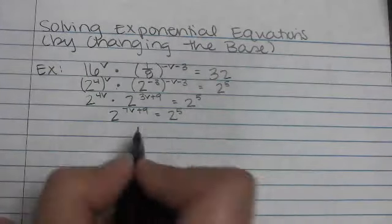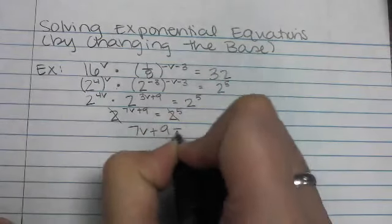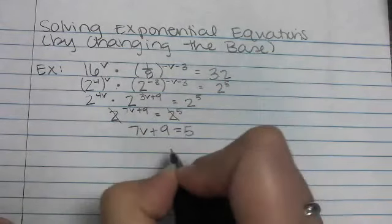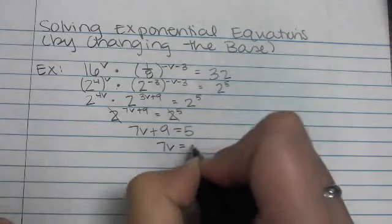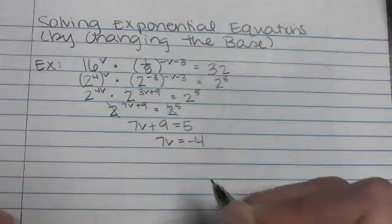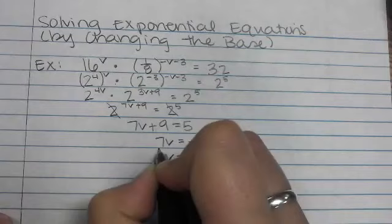And at the point where this is my equation, I can just ditch the bases and solve the equation: 7v plus 9 equals 5. So I'll subtract the 9 over, 7v equals negative 4. And then I'll divide by 7 on each side and get v equals negative 4/7.